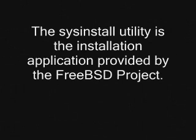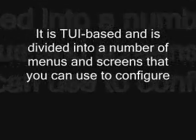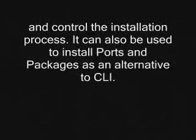The SIS install utility is the installation application provided by the FreeBSD project. It is TUI-based and is divided into a number of menus and screens that you can use to configure and control the installation process. It can also be used to install ports and packages as an alternative to CLI.